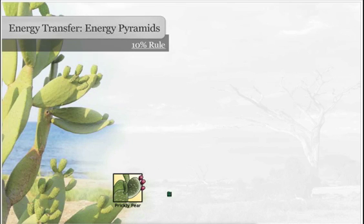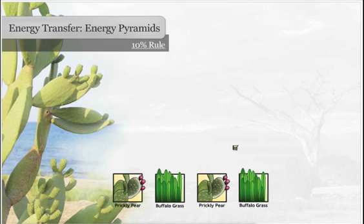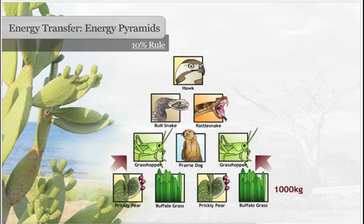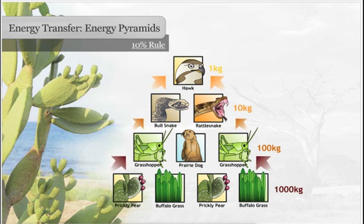In general, only 10% of the energy at one trophic level is passed on to the next level — 90% of energy is lost to the environment. For instance, 1,000 kilograms of producers in level T1 can support 100 kilograms of primary consumers, 10 kilograms of secondary consumers, and only one kilogram of tertiary consumers.